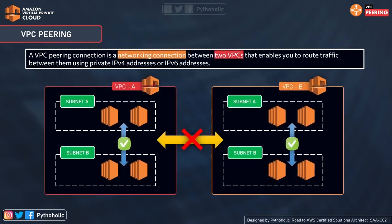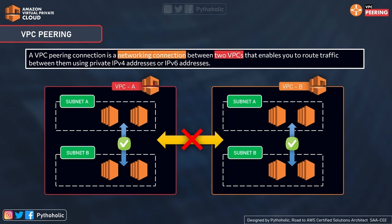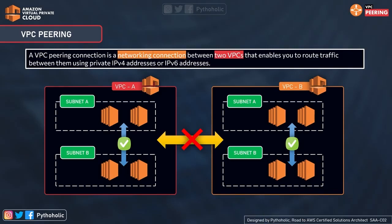The problem we were talking about was a scenario where instances are not able to talk to each other if they are present in other VPCs. A VPC peering connection is a network connection between two VPCs that enables you to route traffic between them using private IPv4 or IPv6 addresses. When we look at this image, we see instances across subnets are able to communicate with each other, but not with instances across VPCs. The instances at VPC A are not able to communicate with the instances at VPC B.